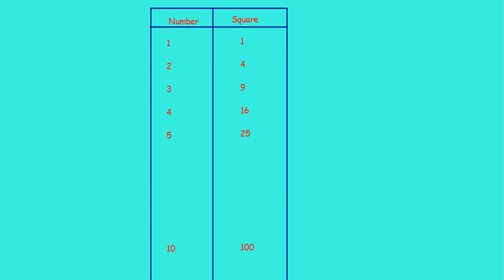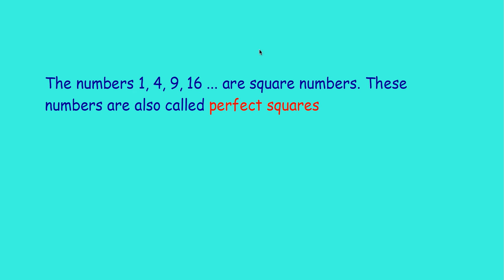Here is a table containing number and square. Up to 5 I wrote — can you complete it for 6, 7, 8, and 9? The squares are: 1, 4, 9, 16, 25, 36, 49, 64, 81, 100. These are all square numbers. The numbers 1, 4, 9, 16 are square numbers. These numbers are also called perfect squares — 1, 4, 9, 16, 25, 36, 64, etc. We can call them perfect squares.